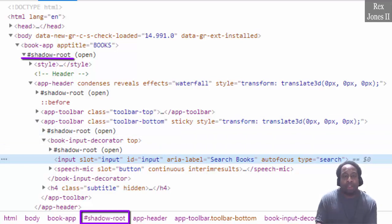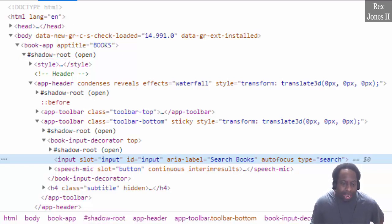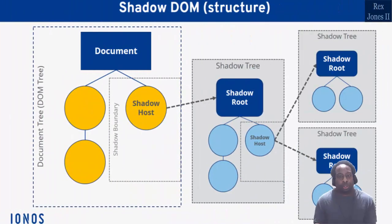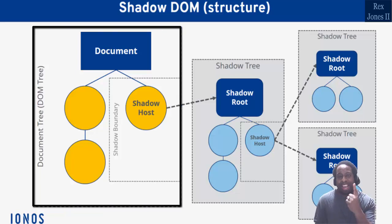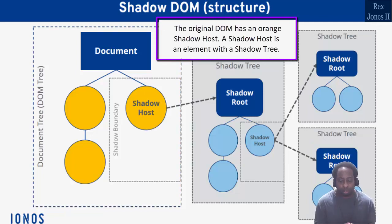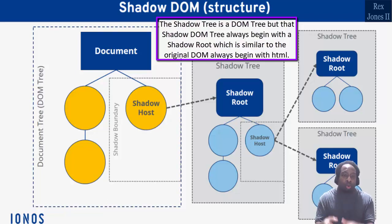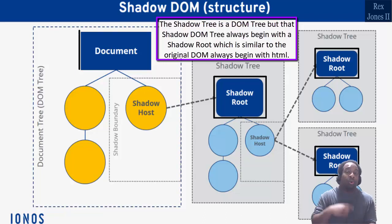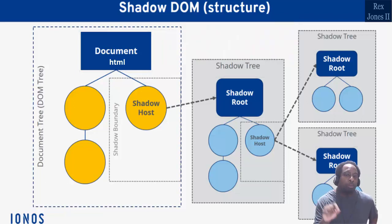The other shadow roots are not relevant and not used for locating the search field. I found this diagram on the internet and it shows the shadow root structure. We have one original DOM and three shadow DOMs. The original DOM has an orange shadow host. A shadow host is an element with a shadow tree. The shadow tree is a DOM tree, but that shadow DOM tree always begins with a shadow root, which is similar to the original DOM which always begins with HTML.